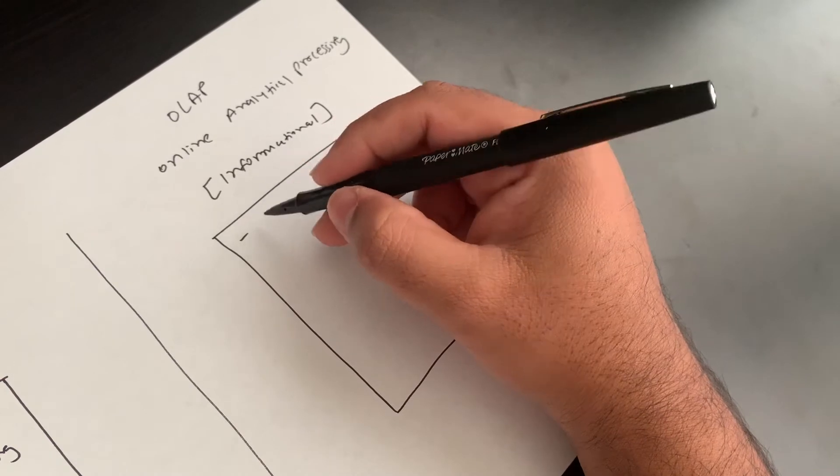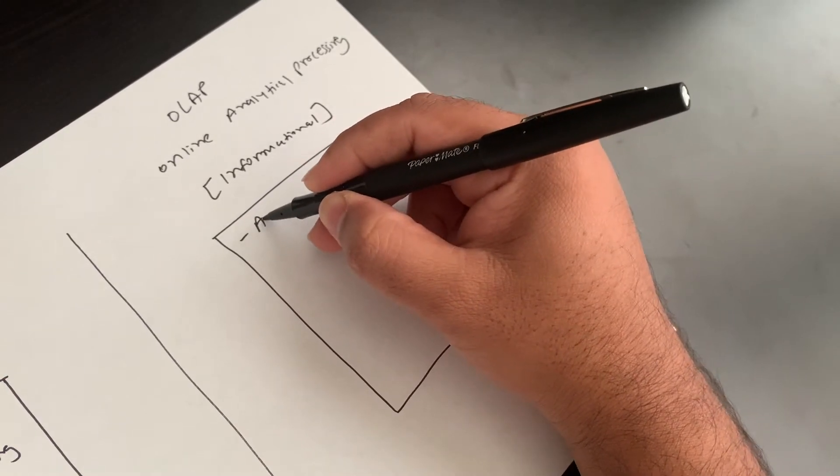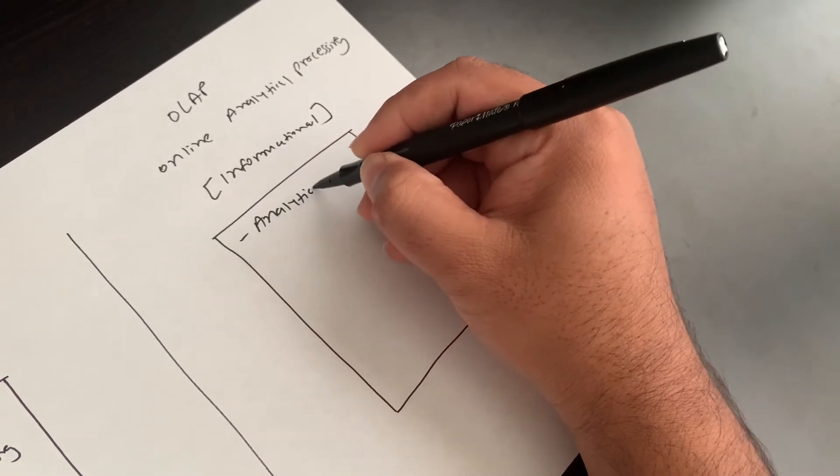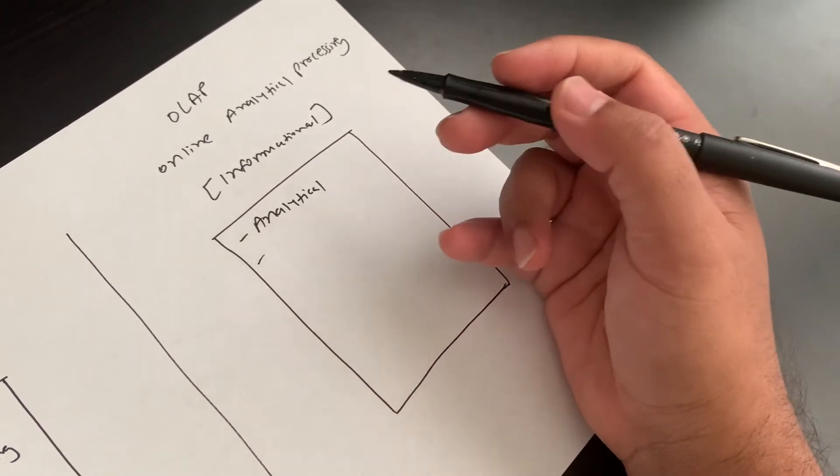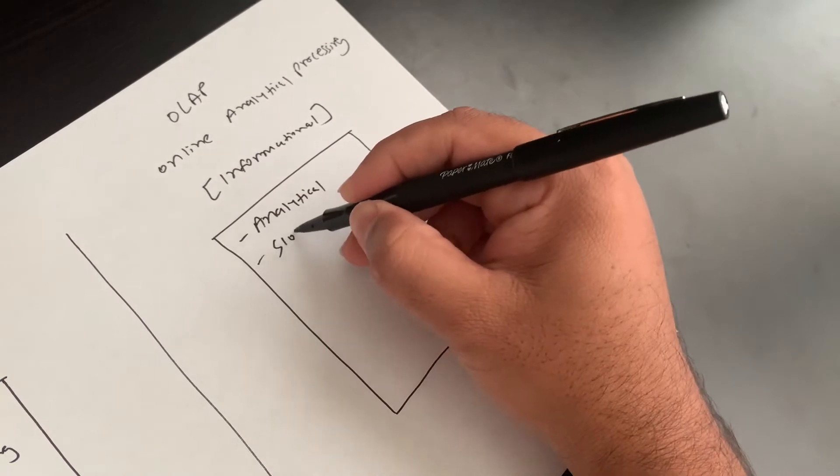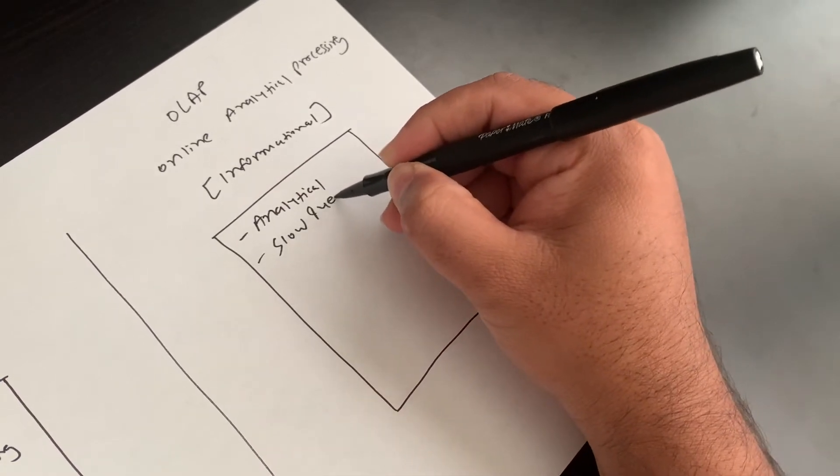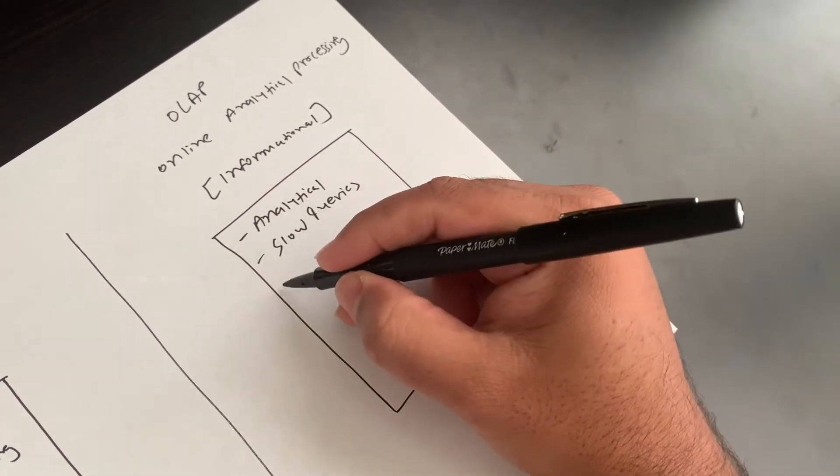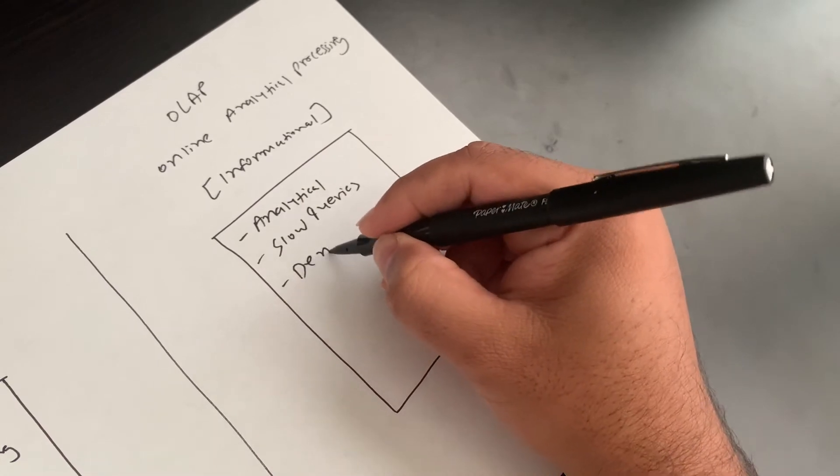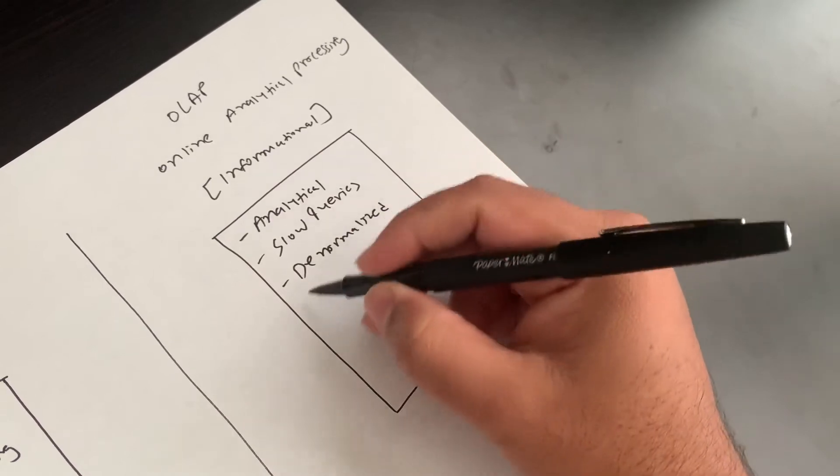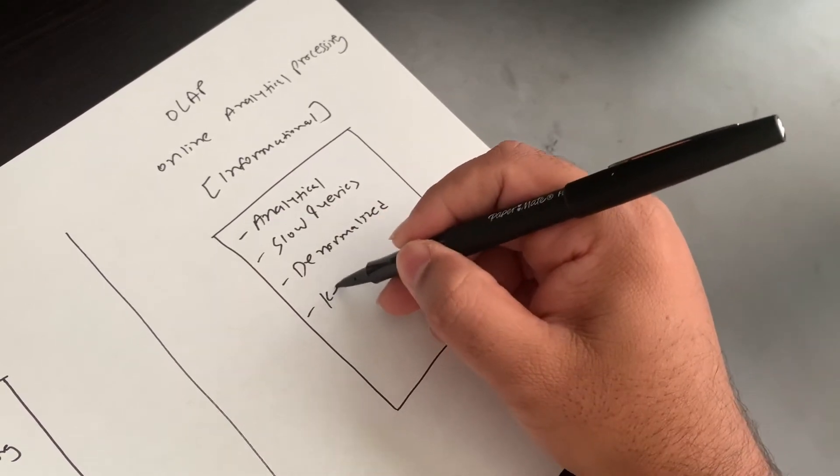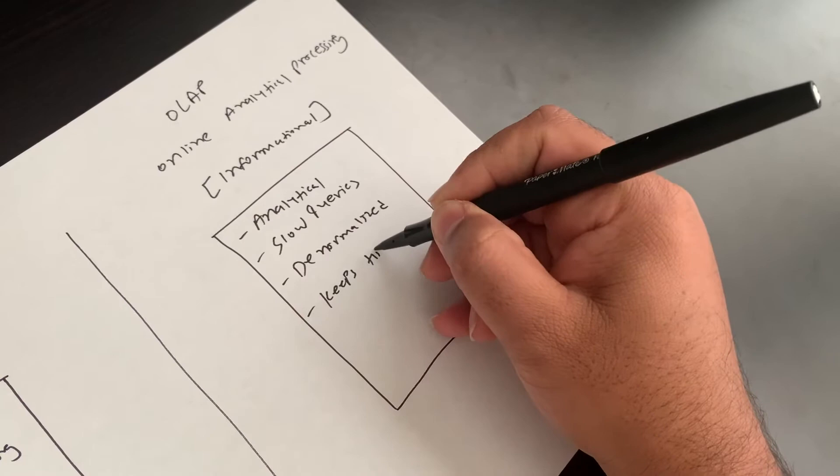OLAP system is analytical, used for analytical purposes. Because it is denormalized, it has slow queries. And the main reason is it keeps the history.